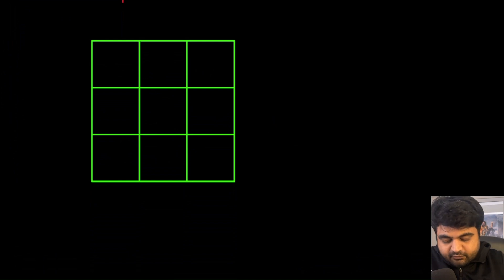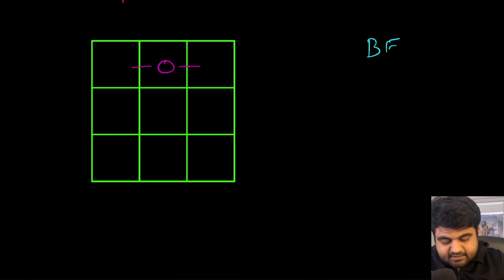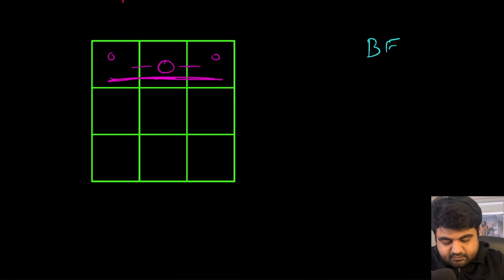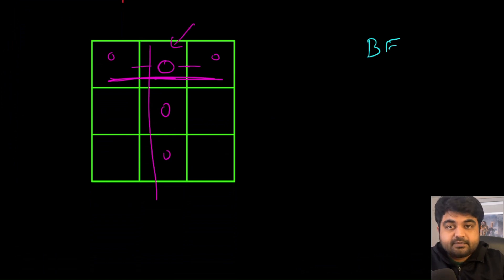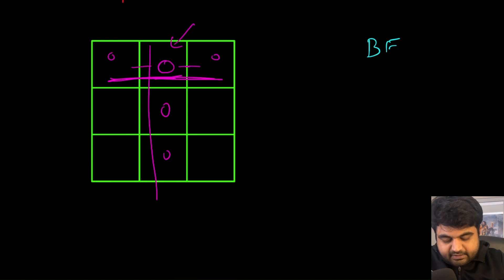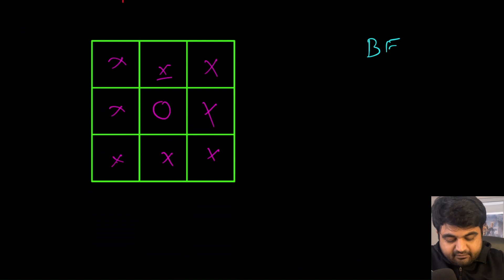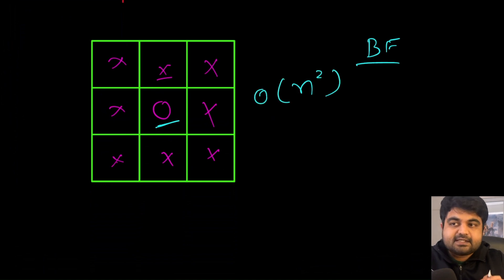Let's see the simplest or brute force approach to check if, at any given position, a player has reached the winning condition. If any player makes a move at a non-diagonal square, we only need to check whether that row or column is all the same symbol. This operation takes O(n) time, and repeating it n times gives us O(n²) time complexity for the brute force approach.